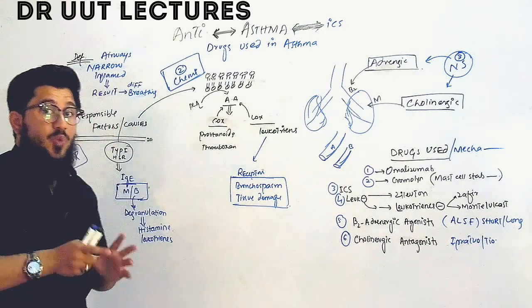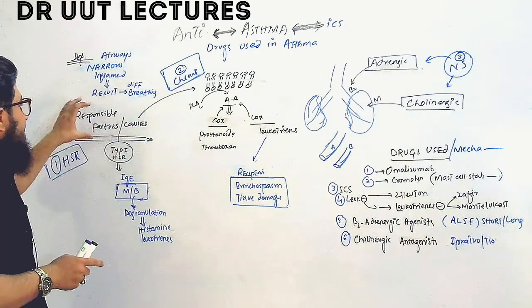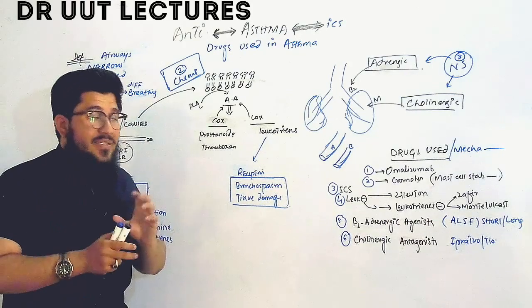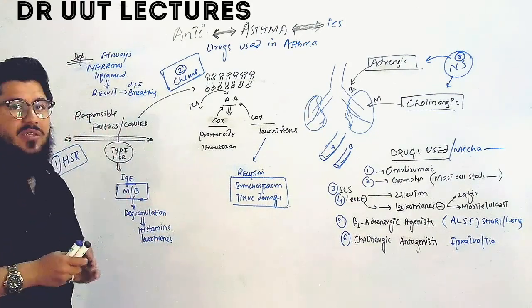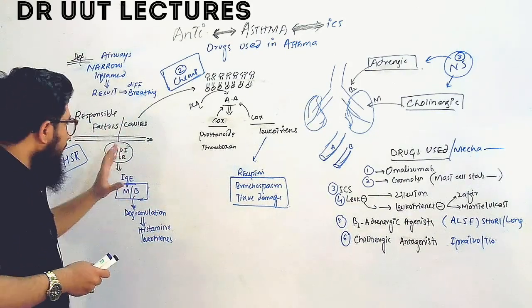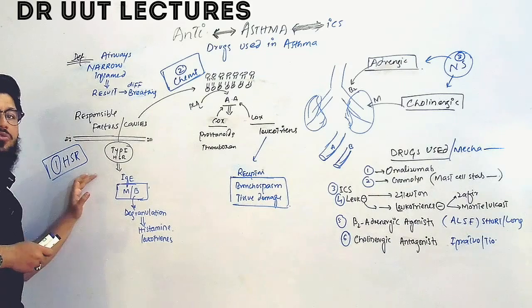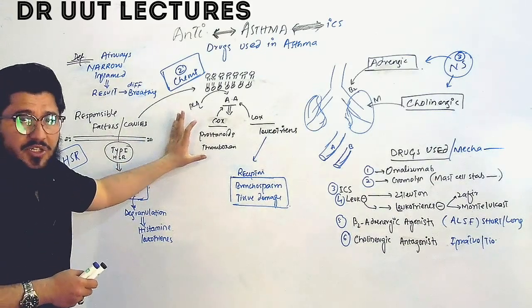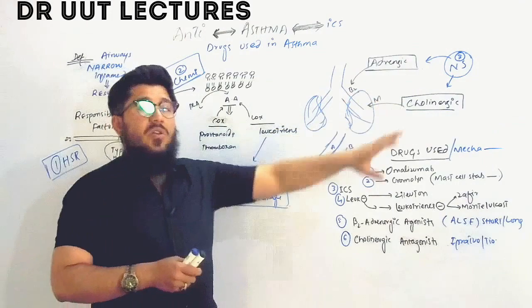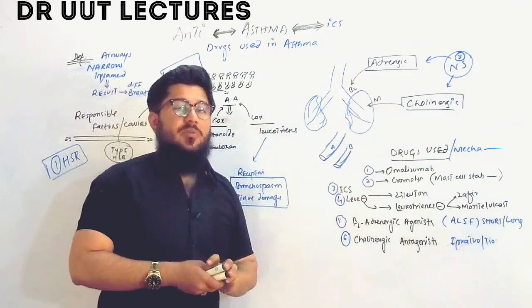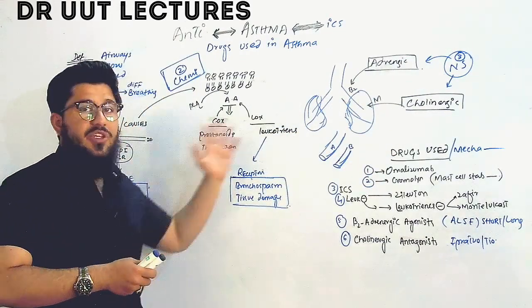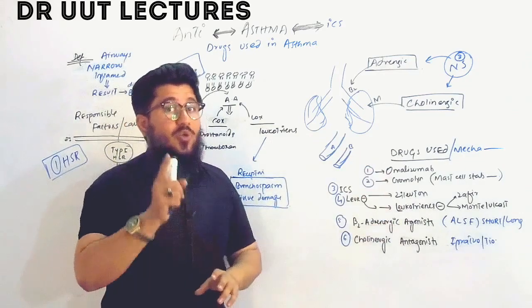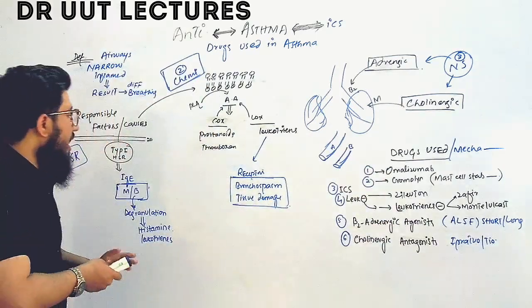Now the second point: the responsible factors or causes. We have three basic factors — number one is hypersensitivity reaction, number two is chemical mediators, and number three is our nervous system. We will focus on these three areas in order to understand the pharmacology.